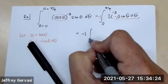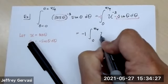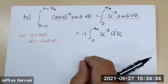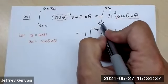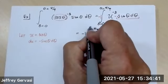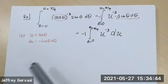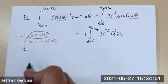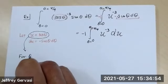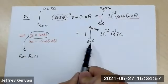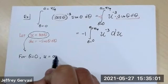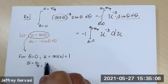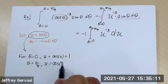The last thing that has to go are the limits of integration. These are theta — theta equals zero to theta equals pi over four — so those have to be transformed too. For theta equals zero (the lower limit), U equals cosine of zero, which equals one. For theta equals pi over four (the upper limit), U equals cosine of pi over four, which is root two over two. So the entire transformed integral is now in terms of U.